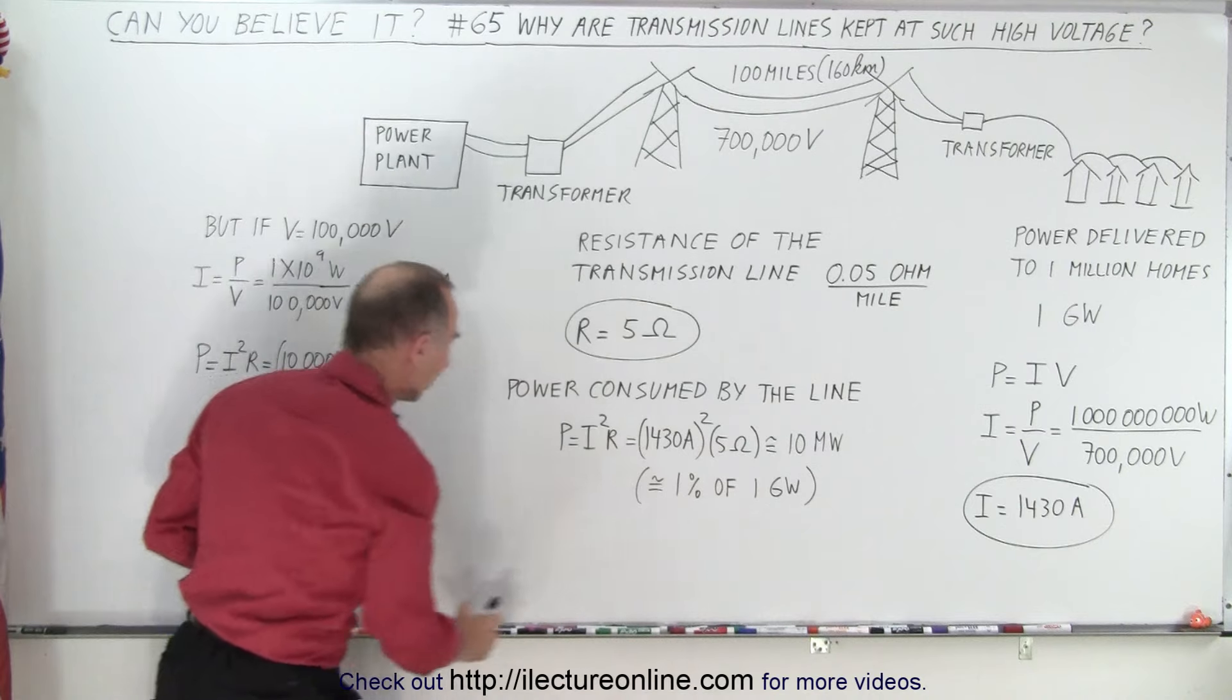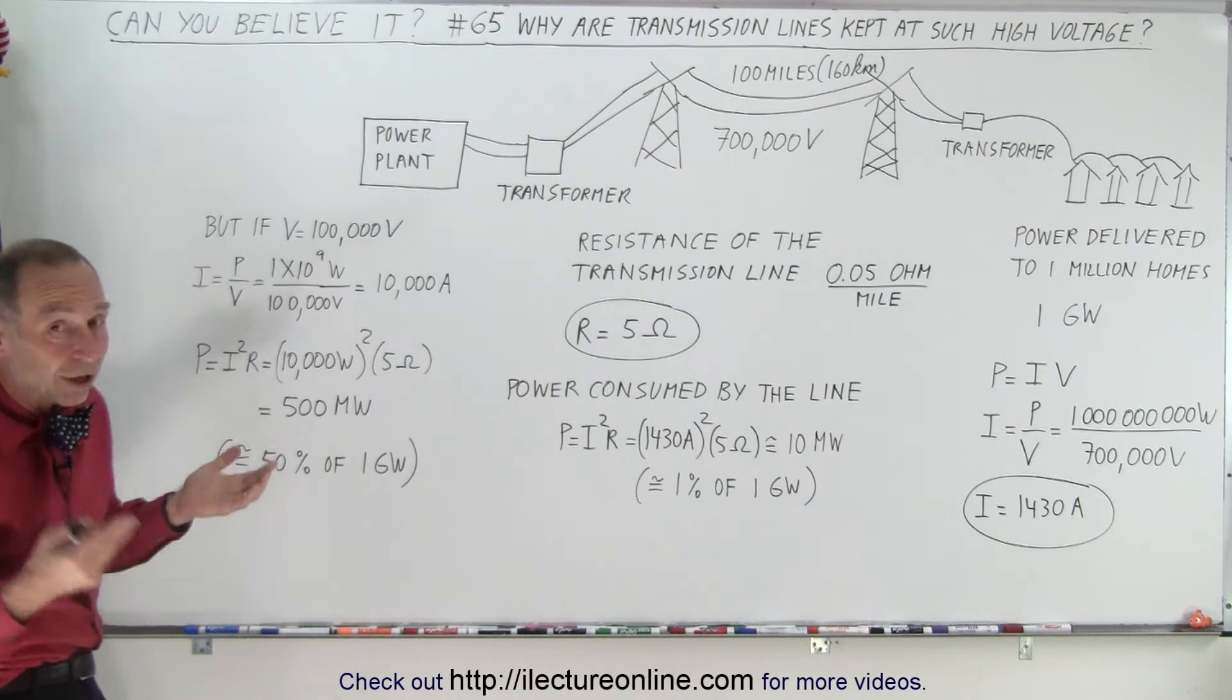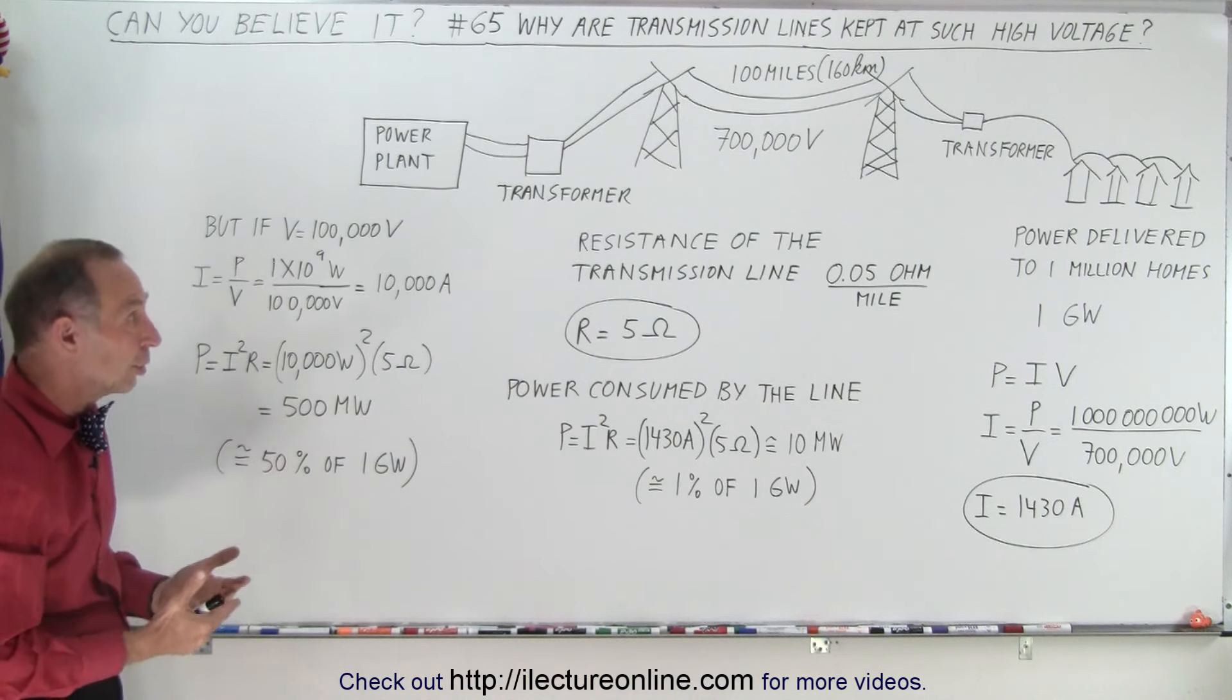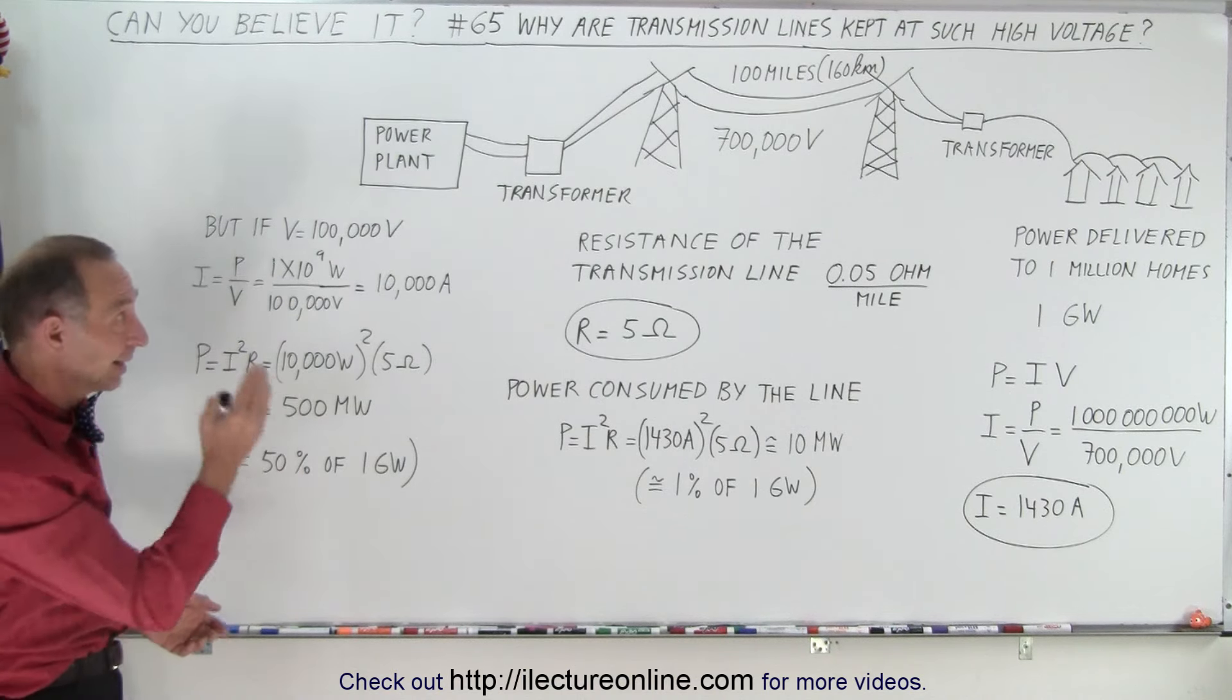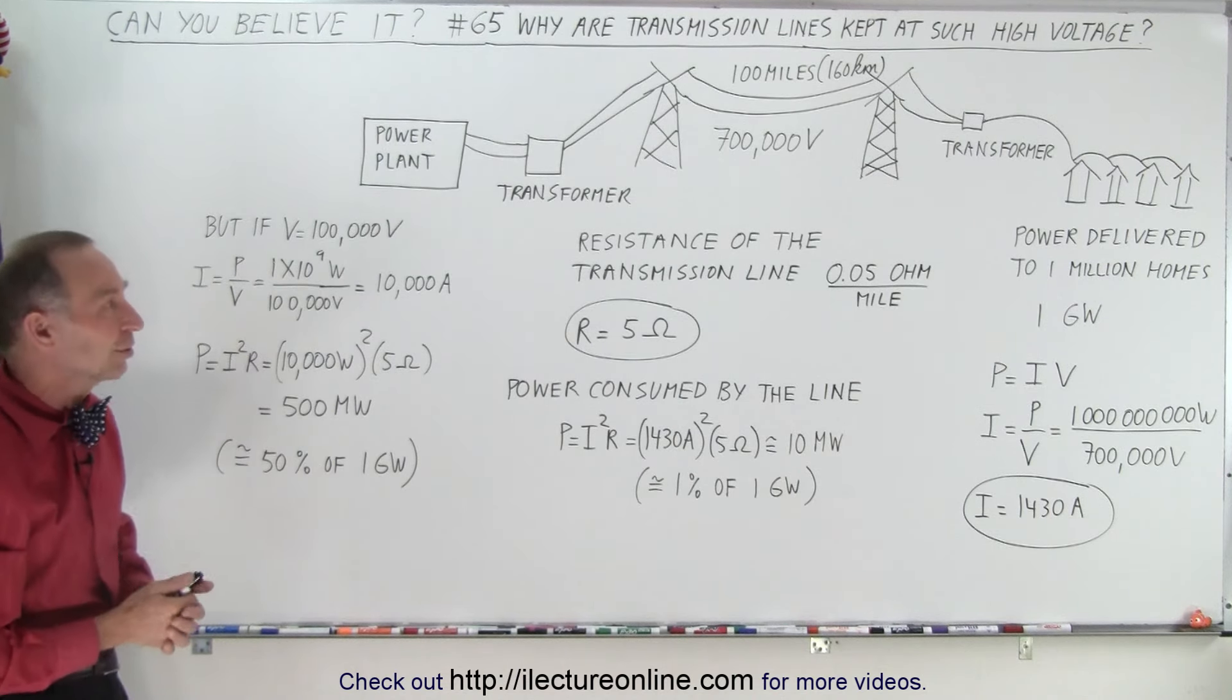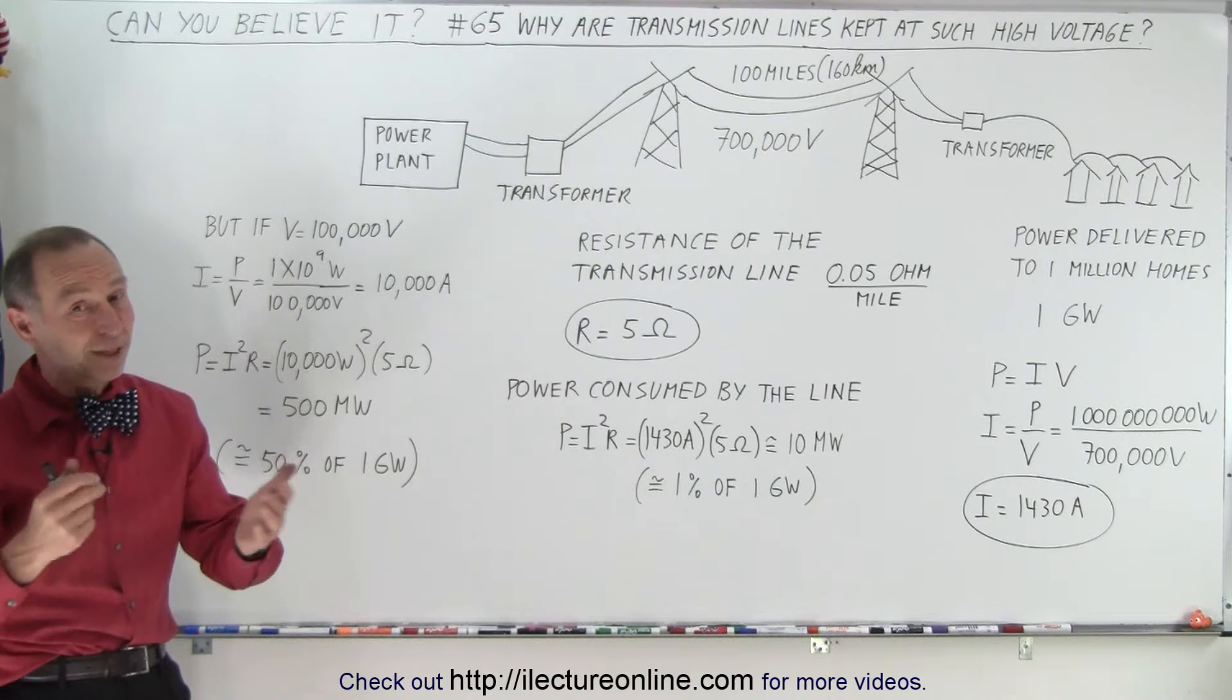So you want to up the voltage so you can reduce the current to the point where the power consumed is far less than what it would be if the voltage was a lot lower. So even a hundred thousand volts, which seems like a lot of voltage, is still way too low. You'd have way too much power loss and too little energy would make it to the homes. And so that is why they send that power way up, in some cases even over a million volts, just so that they can reduce the power loss. And that is how it's done.